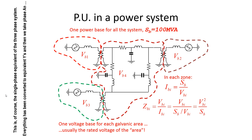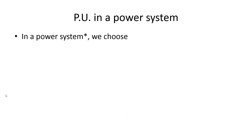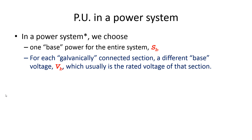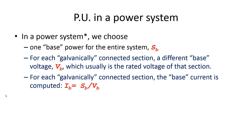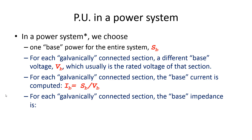A transformer has two galvanic areas; a power system has many more. To summarize: for each galvanically connected section, we choose a different base voltage — usually the rated voltage of that section — and we compute the base current and base ohms for each section.